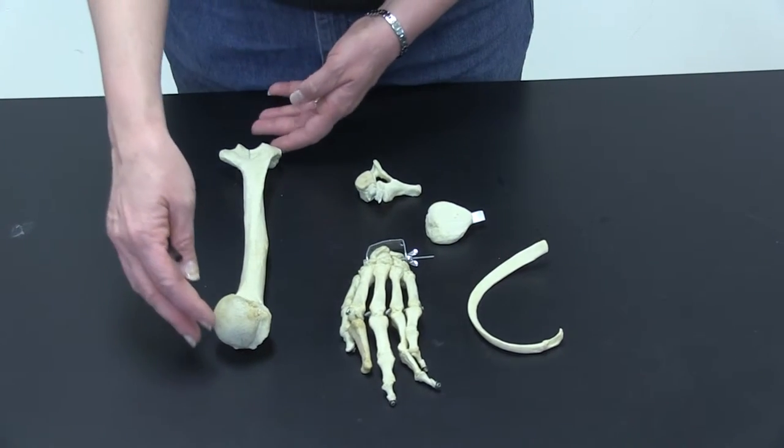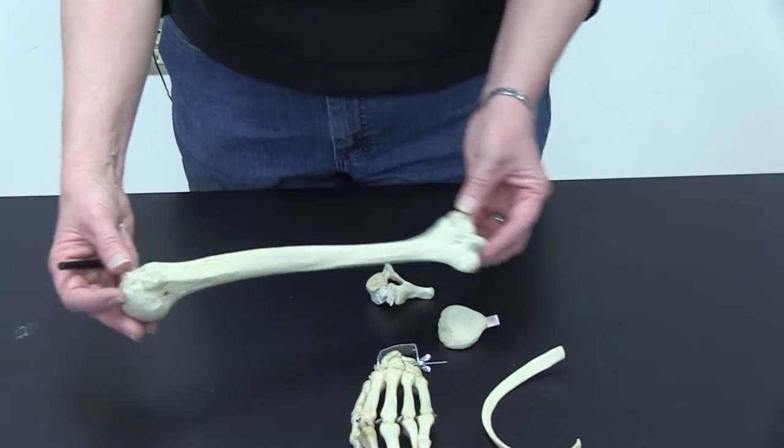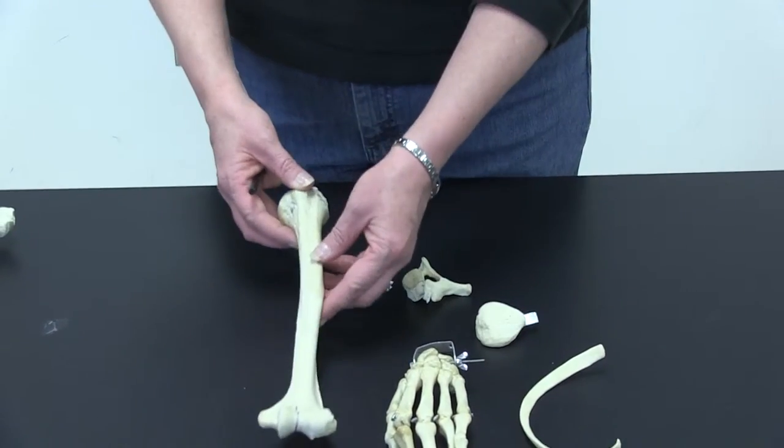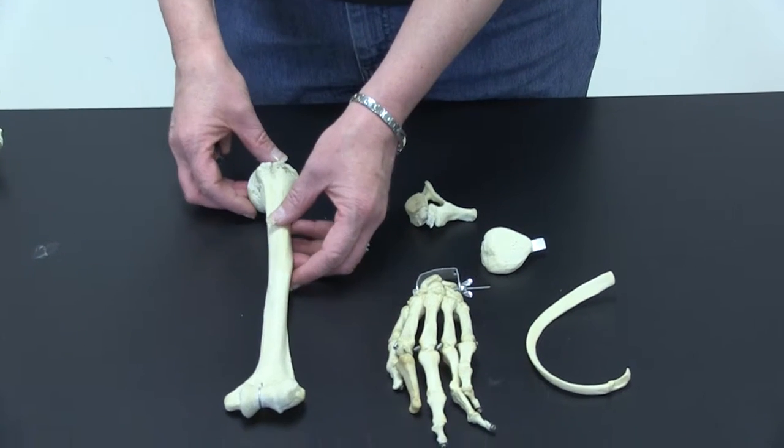So bones can be classified by their shape, and here we have what we call a long bone, and that's kind of obvious. It's a long bone. This is a humerus bone.